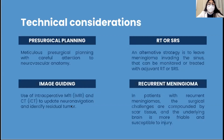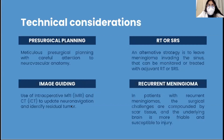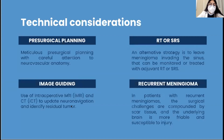Intraoperative imaging can be used for emerging approaches such as adaptive hybrid surgery, whereby the surgeon plans to leave a small, deemed unresectable residual that can be treated with postoperative SRS. For recurrent meningioma, surgical challenges are compounded by scar tissue and the underlying brain being more friable and susceptible to injury. Indications for further surgery include symptomatic meningioma growth and reduction of tumor to leave a smaller target for postoperative radiation.